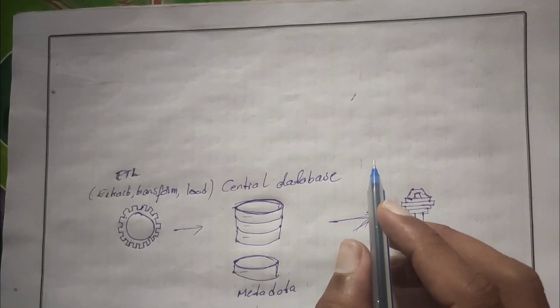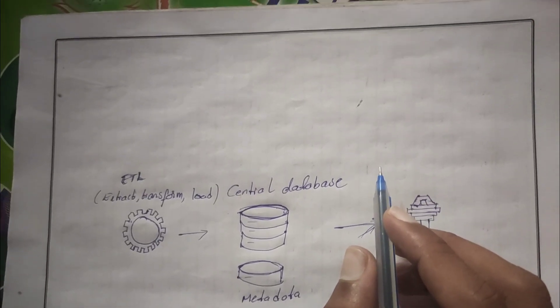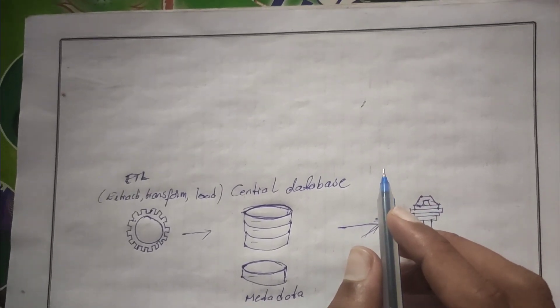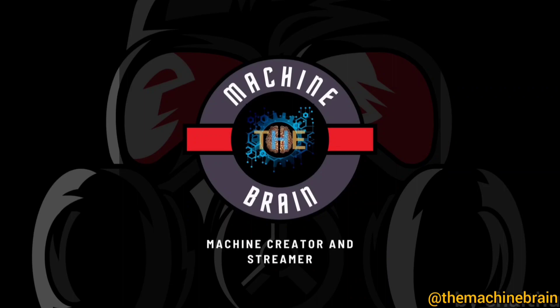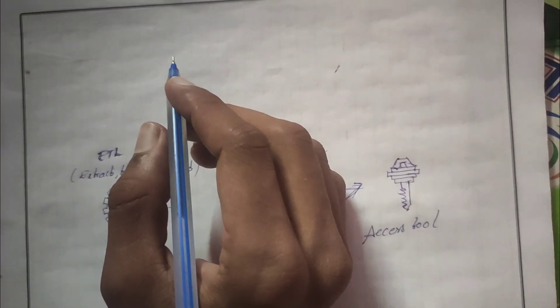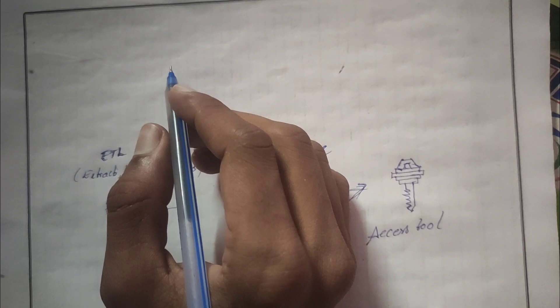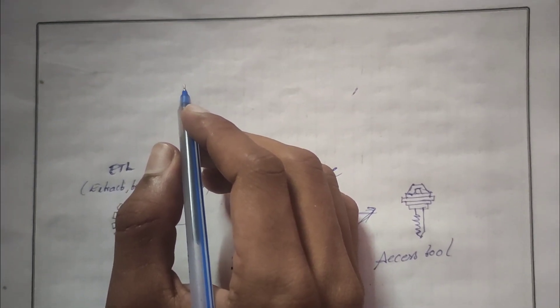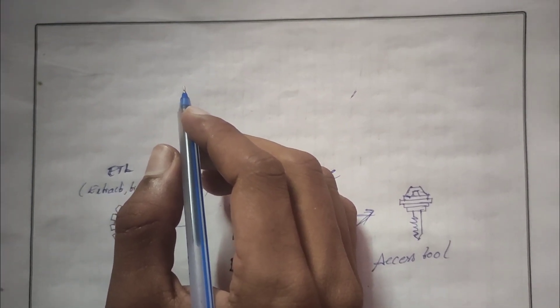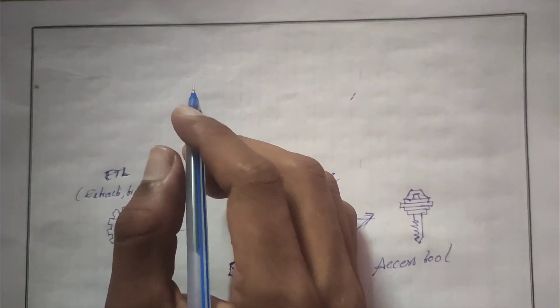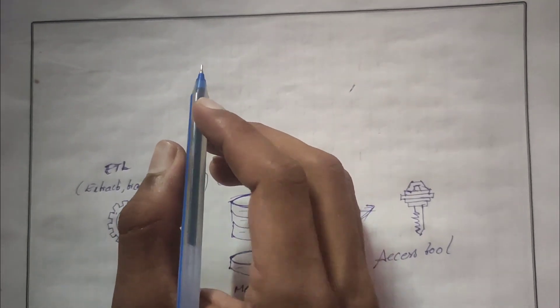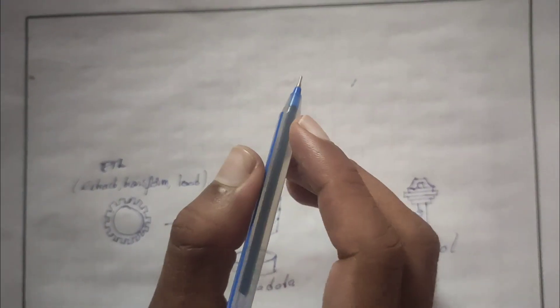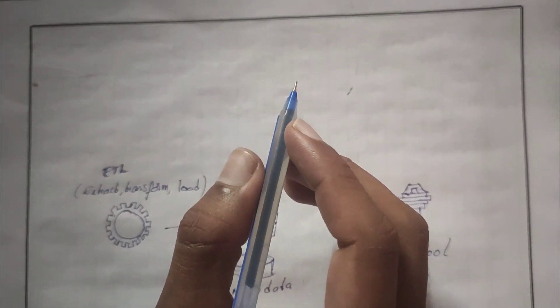Welcome back to my channel, The Machine Brain. In the previous class we have seen what is data warehousing and the characteristics of a data warehouse. Today we will discuss about the components of the data warehouse.